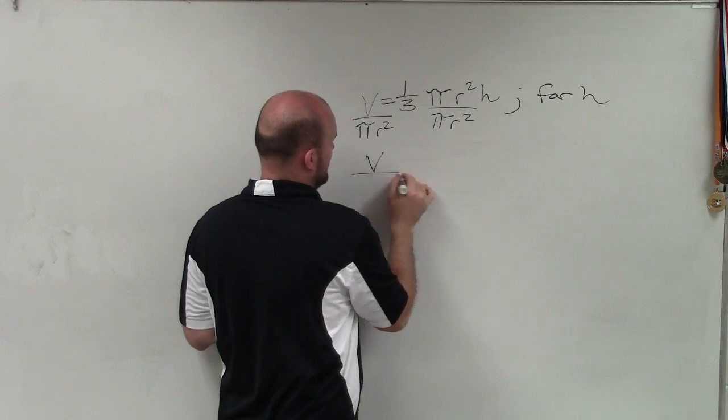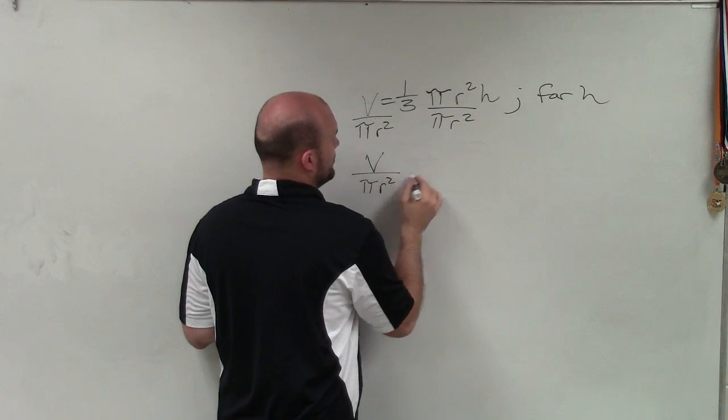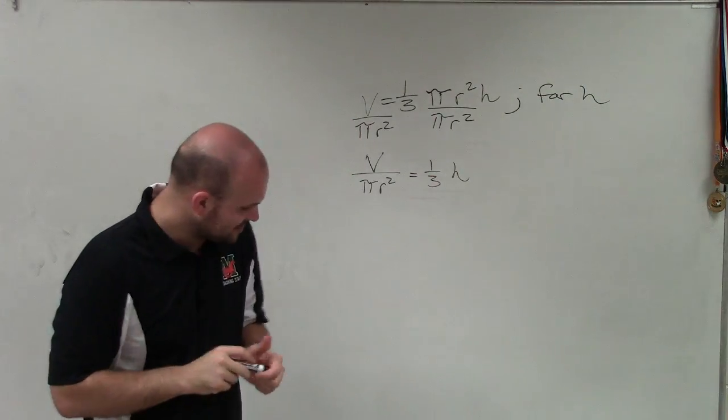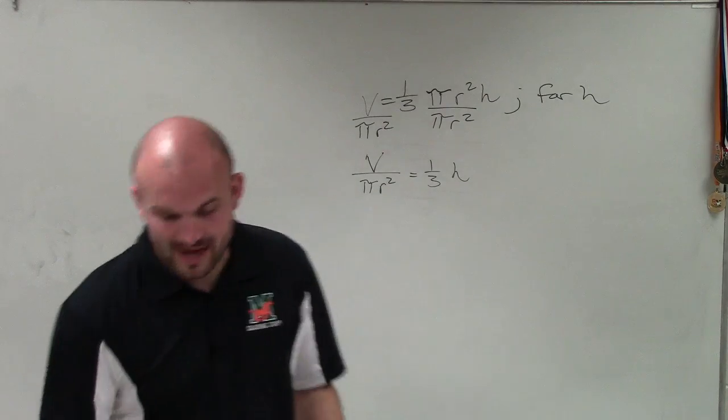And I'll tell you why I'm only doing the pi and the r squared, because I want to leave this as 1/3 h, because a lot of times fractions get with a lot of students on how do I undo the fraction.